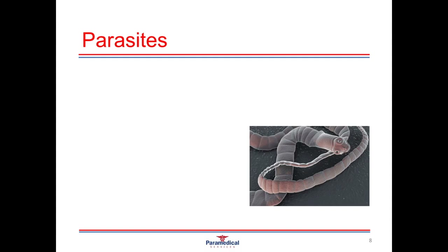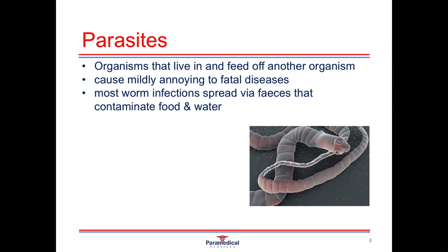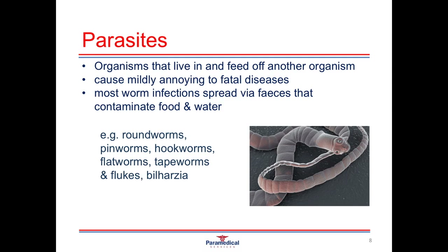The last type of pathogenic agent we're going to look at are parasites. Parasites need to live and feed off other organisms; they don't live well independently and only for very short periods of time. They can cause mildly annoying to very fatal diseases. Most worm infections are spread via feces that contaminate food and water sources, and the most common places practitioners will see this is in developing countries where there is inadequate supply of clean water and good sanitation practices. Examples of parasites include roundworms, pinworms, hookworms, flatworms, tapeworms, and flukes. These would be causing more minor infections in an individual, but you can get very severe infections such as hydatid cyst infections which, without treatment, can be fatal.